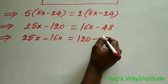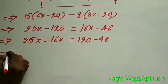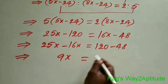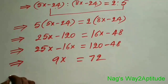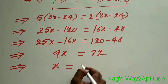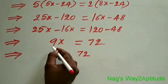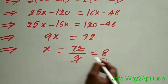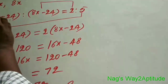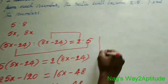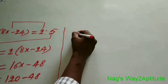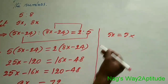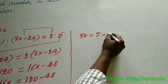So, 25x minus 16x equals 120 minus 48, which gives 9x equals 72. Therefore, x equals 72 divided by 9. 9 goes into 72 eight times. So, the value of x is 8.